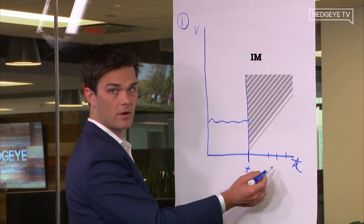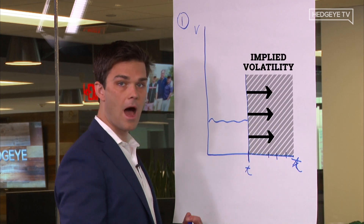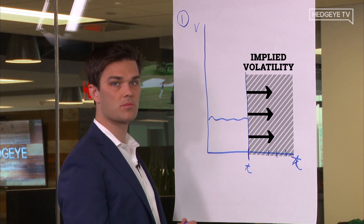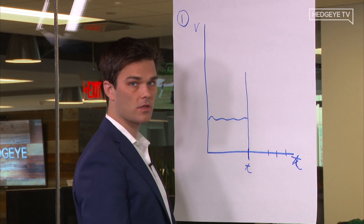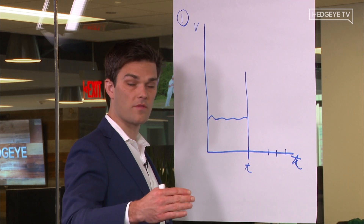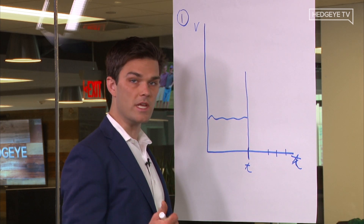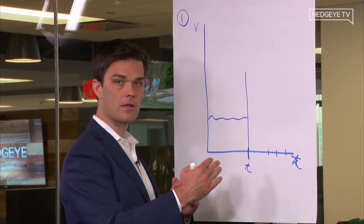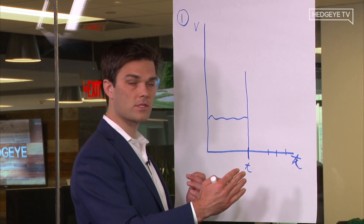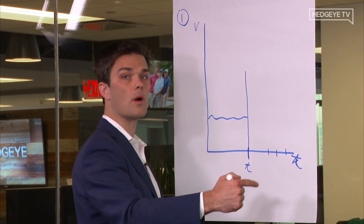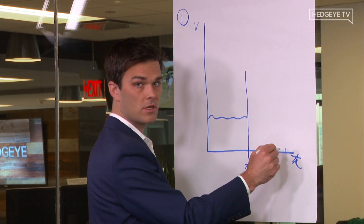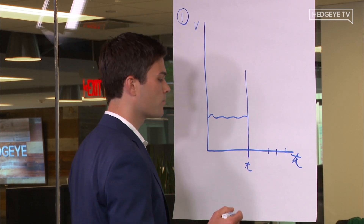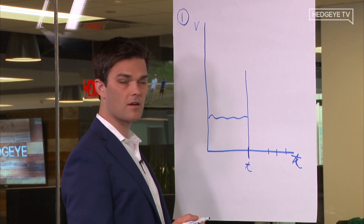You can look at the price of different option strikes for contracts that expire in the future, and using a model you can back out what the implied volatility assumption is — the market's expectation about volatility. If you're pricing an option moving forward, you need a volatility assumption to put into the model to drive a price. What implied volatility does is go backwards: you start with the price and solve for volatility in the model. That's what implied volatility is — it simplifies things and gives us insight into what kind of volatility is expected in the future.